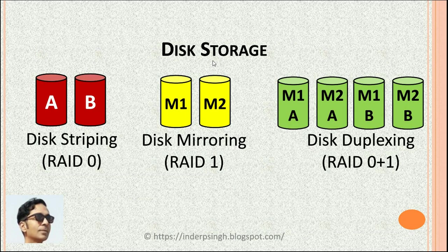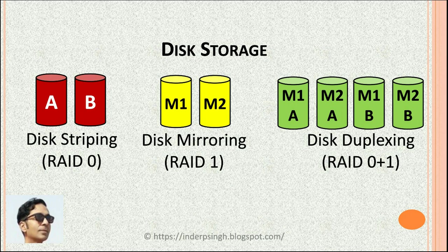Next in this DBMS tutorial is Disk Storage, which refers to the physical storage of data on disks. One option in DBMS is Disk Striping or RAID 0. In Disk Striping, the data is divided into blocks and stored on multiple disks, and read in parallel from multiple disks, improving performance. However, data will be lost if one of the disks fails.